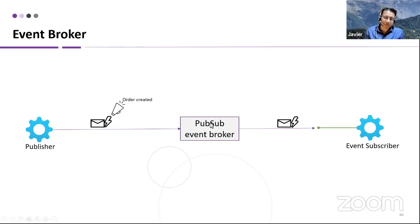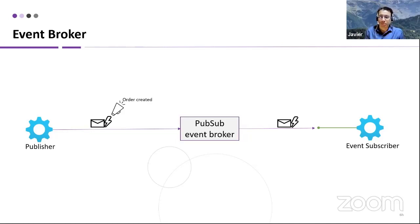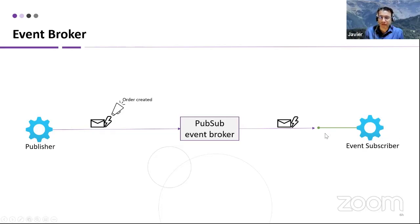You can also think about a pub/sub event broker in which a publisher emits events like 'order created' and an event subscriber consumes that in a very passive way — it just exposes an endpoint and the event broker pushes that event to that endpoint. In this architecture, the event subscriber is decoupled from the publisher and even from the broker. So in theory, you can replace the broker and the event subscriber doesn't need to be aware of that. This is a better approach when you're looking for decoupling, scalability, and distributed systems.